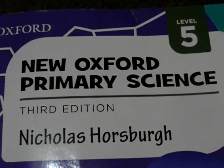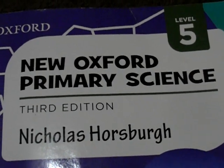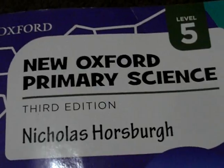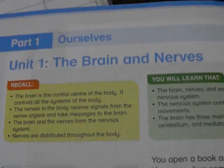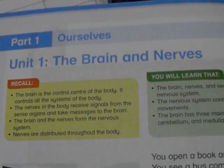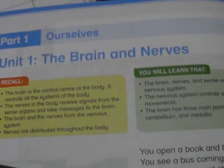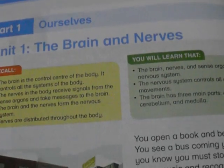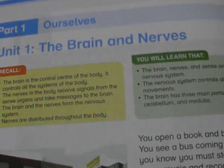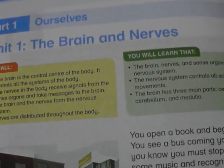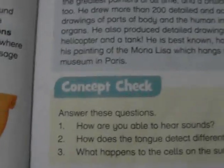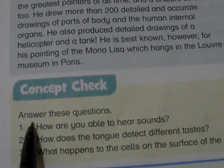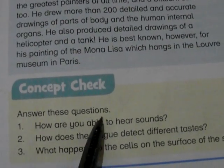Assalamu alaikum students. Today we are going to study Science Class 5, Lesson 1, Unit 1: The Brain and Nerves. As we have completed this whole lesson, today we are going to do its exercise, page number seven — Answer These Questions.